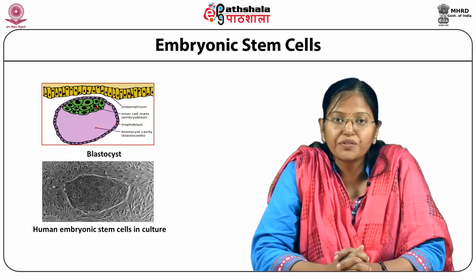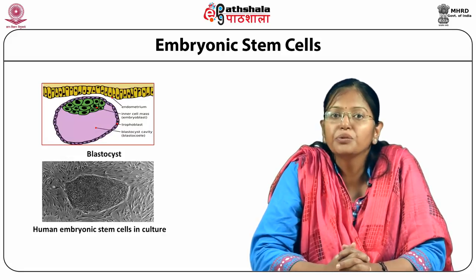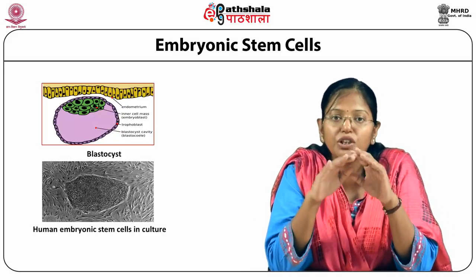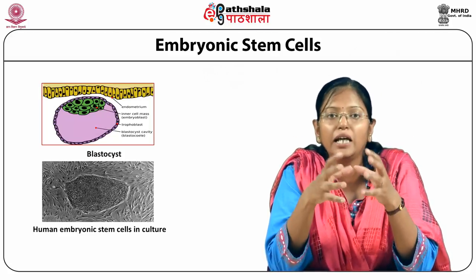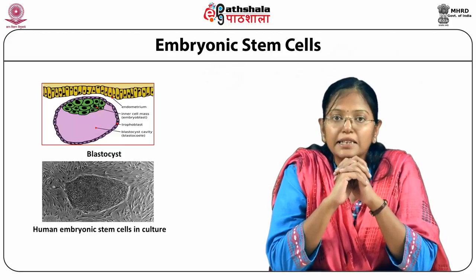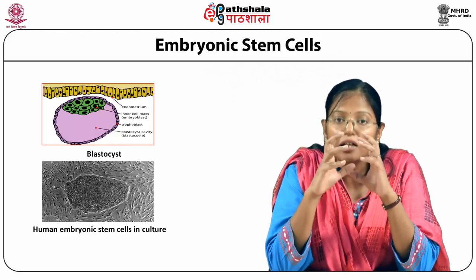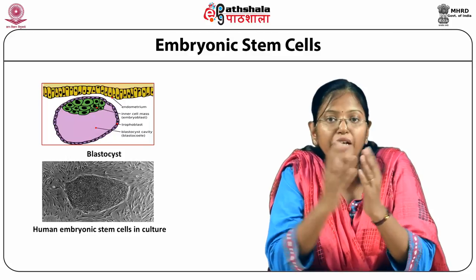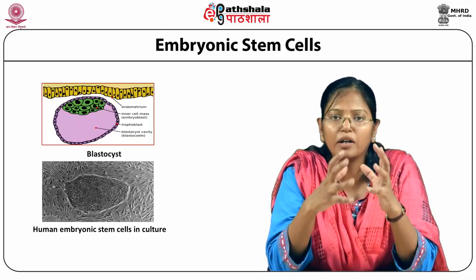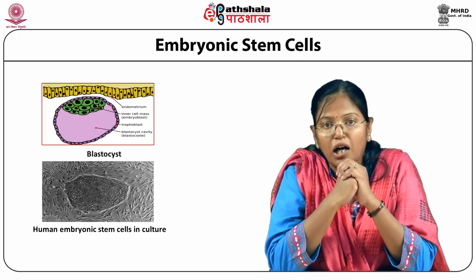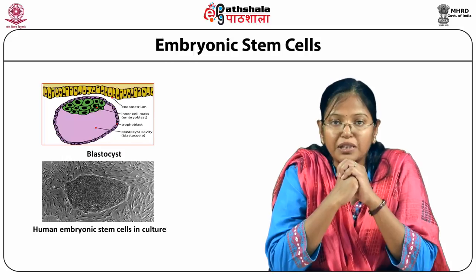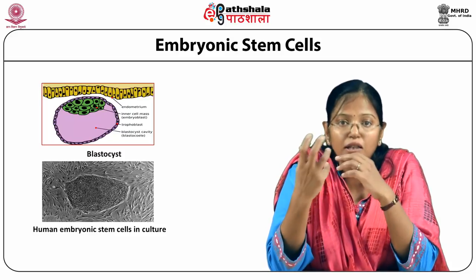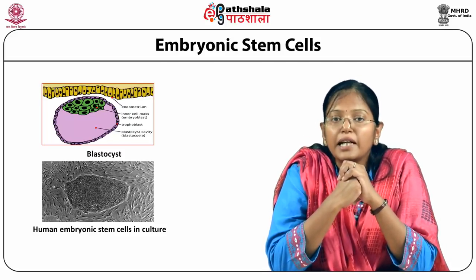A very important source of stem cells, which also has many ethical issues attached, is embryonic stem cells. Embryonic stem cells are situated inside the blastocyst, or the inner cell mass of the blastocyst. These inner cells contain a very high amount of stem cells with the best stemness properties, and they are totipotent or pluripotent in nature — they can make the whole organism or most cell types of our body. However, ethical issues related to the source of embryos are associated with these stem cells.